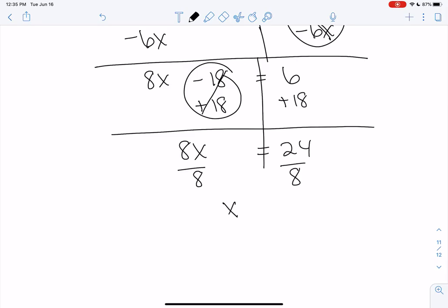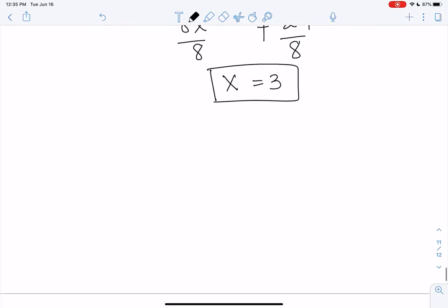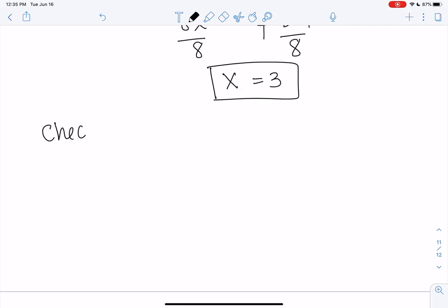And then our final step is division. And what's that? x is 3. 24 divided by 8. And then this one's probably even more important to check since there's so many steps.